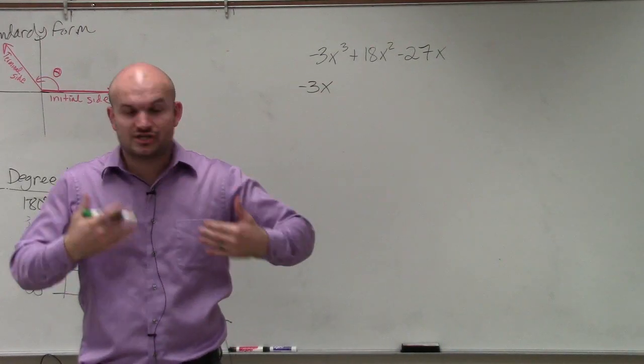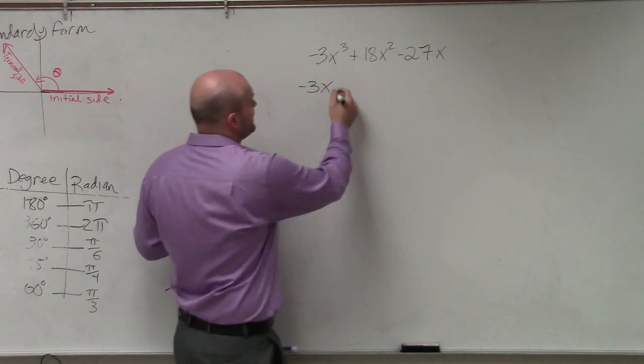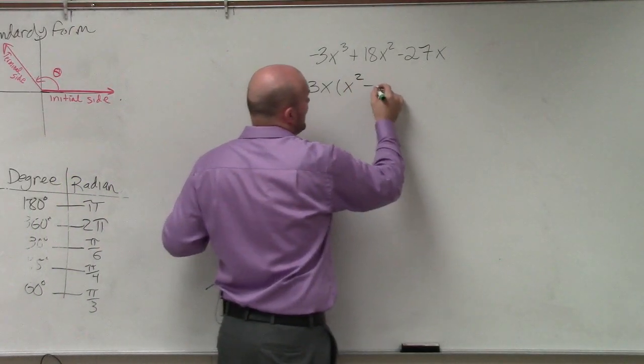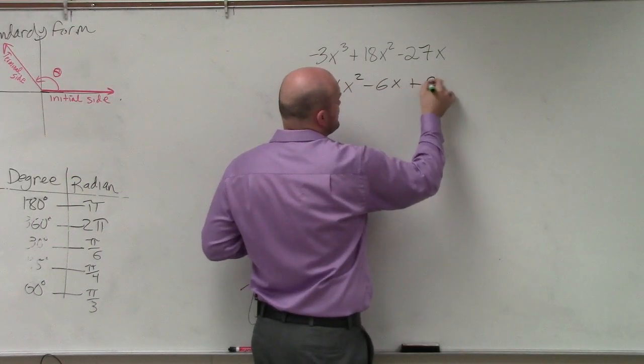So when I factor that out, which is just like dividing that out, I now obtain x squared minus 6x plus 9.